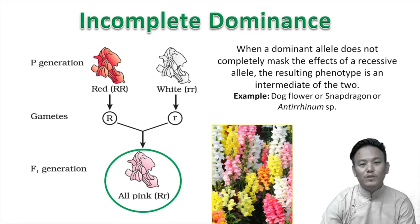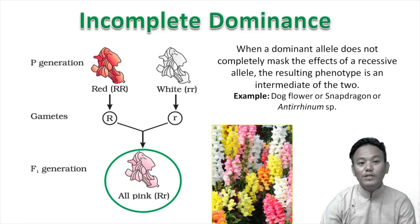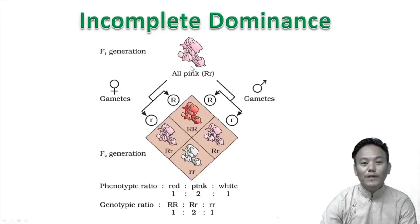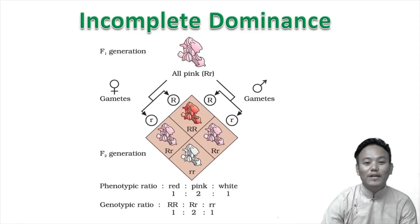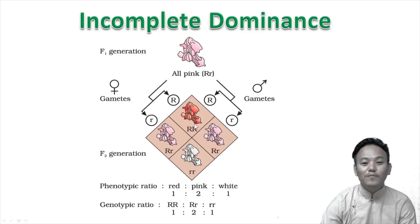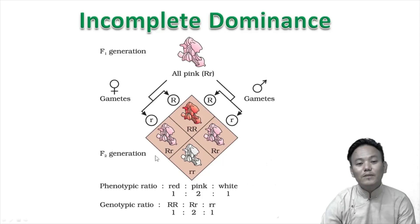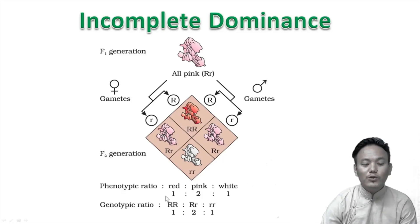You can see the difference between the monohybrid cross performed by Gregor Mendel with pea plants and the monohybrid cross carried out with snapdragon plants. When we self-pollinate the pink F1 generation plants, the results are very different from Mendel's monohybrid cross. In Mendel's cross the phenotypic ratio should be 3:1, but in the case of incomplete dominance in snapdragon plants the phenotypic ratio is 1:2:1.